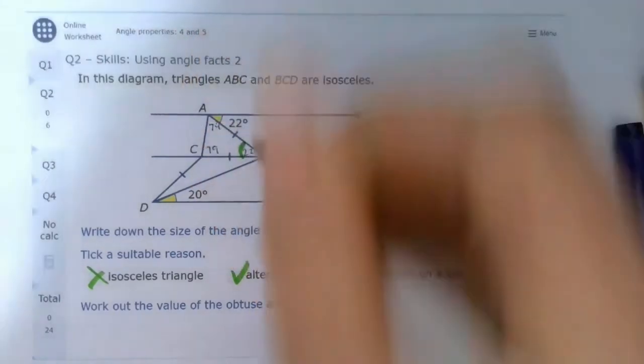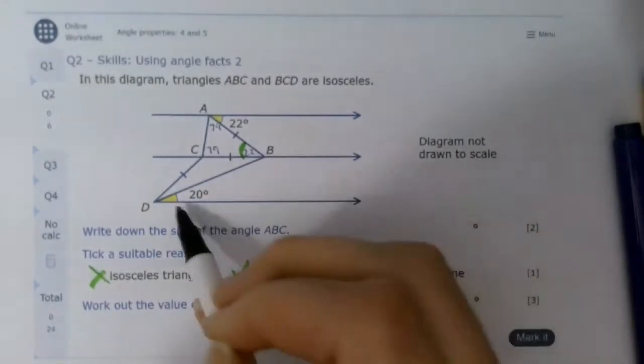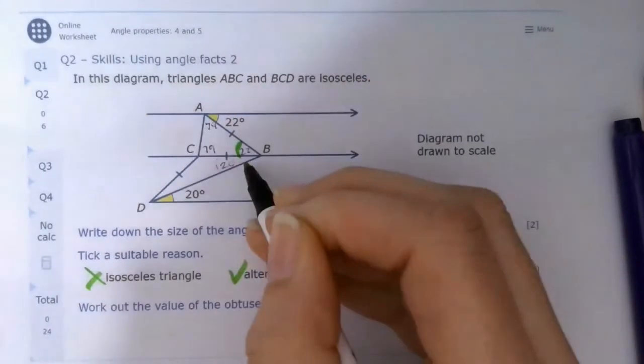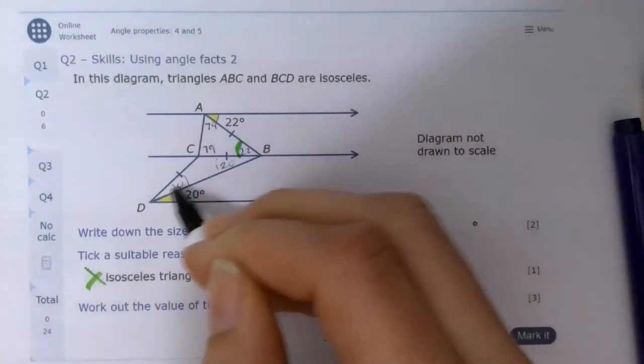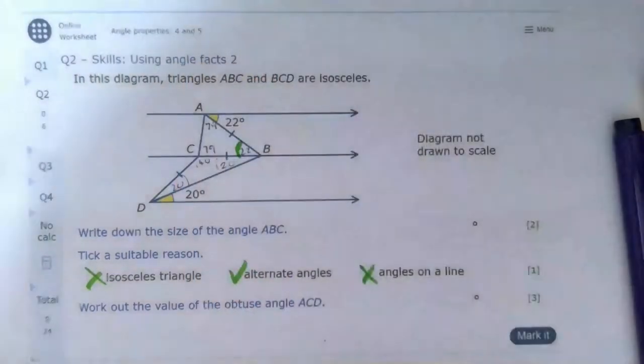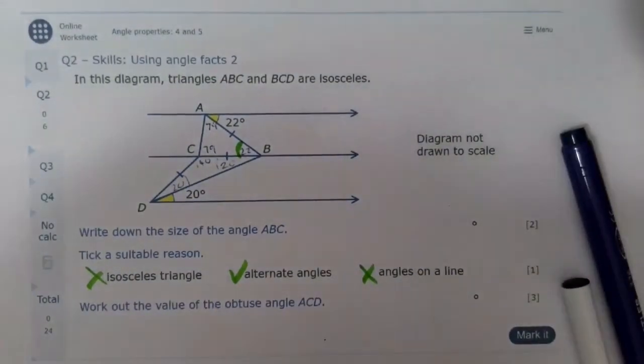Okay, so that's that triangle done. Now what about this triangle down here? Well, if those were alternate angles, then these will be alternate angles, which means that this is 20 degrees. It's an isosceles triangle, so that one's also 20 degrees. And it's a triangle, which means it adds up to 180, so that must be 140 degrees.